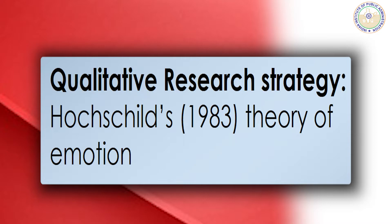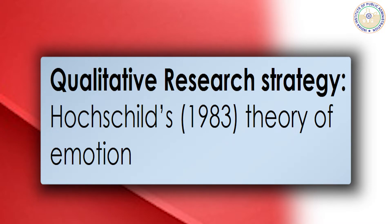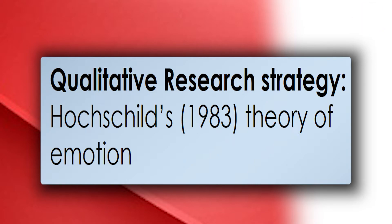Qualitative research strategy generates theory. It follows an inductive approach, which means studying specific observations and based on that a theory is established. For example, Hochschild's theory of emotion emerged in 1983 from a questionnaire study of university students. The theory states that emotional labor occurs when employees introduce or suppress emotions in order to portray themselves in a certain light, which in turn produces a wanted state of mind in another.